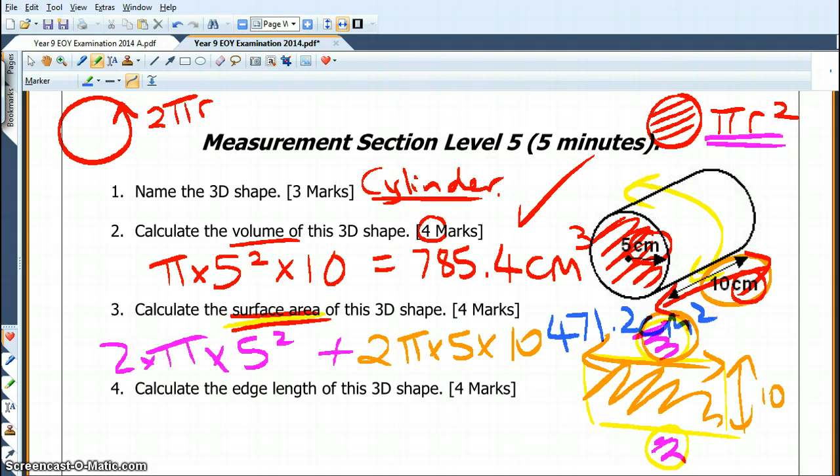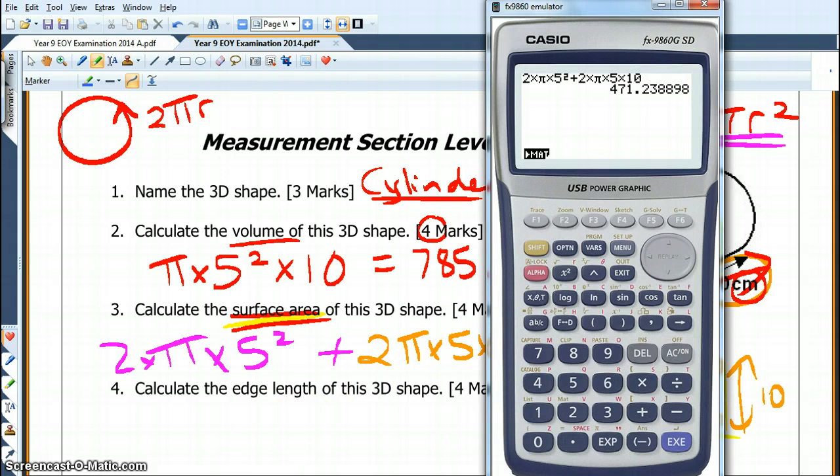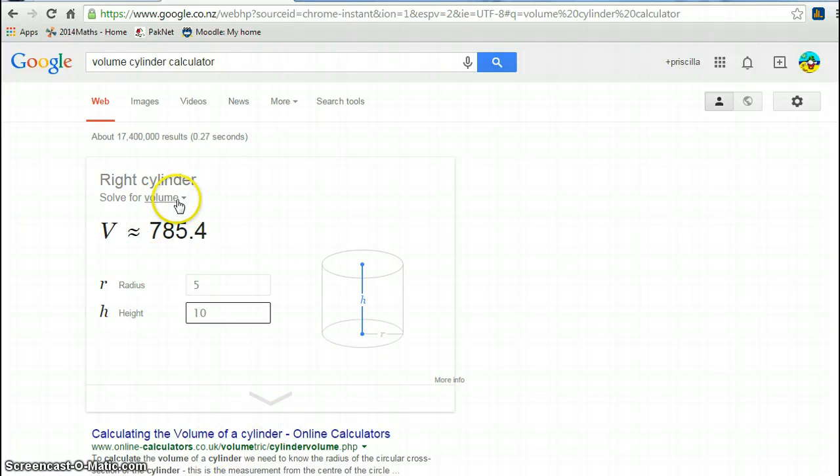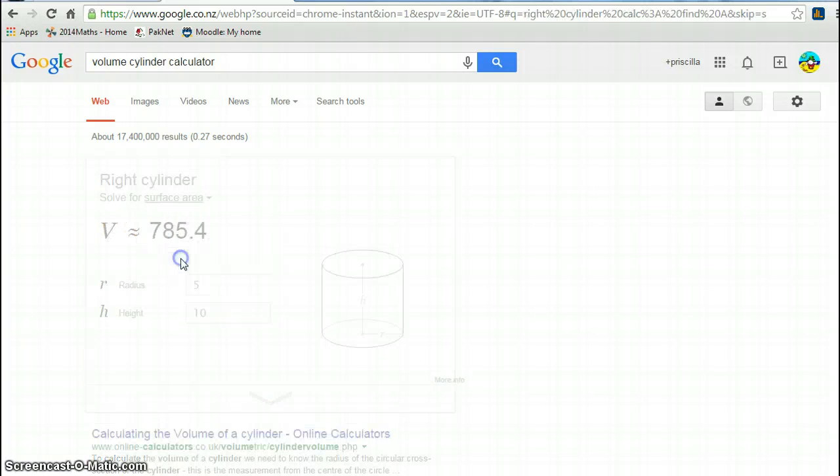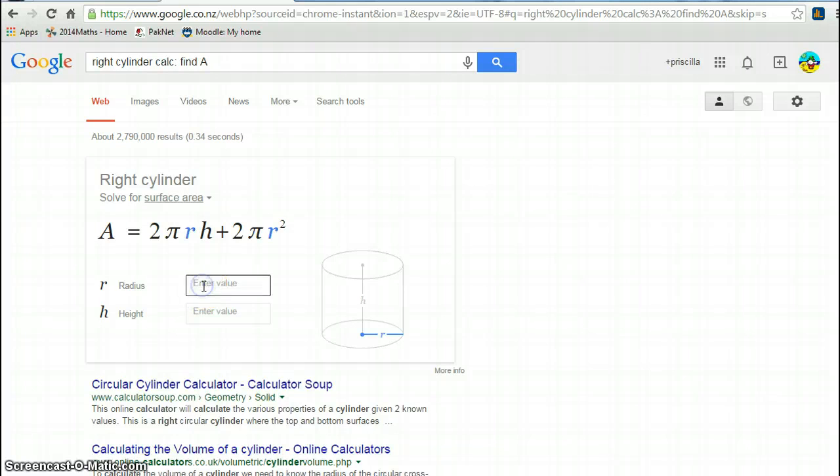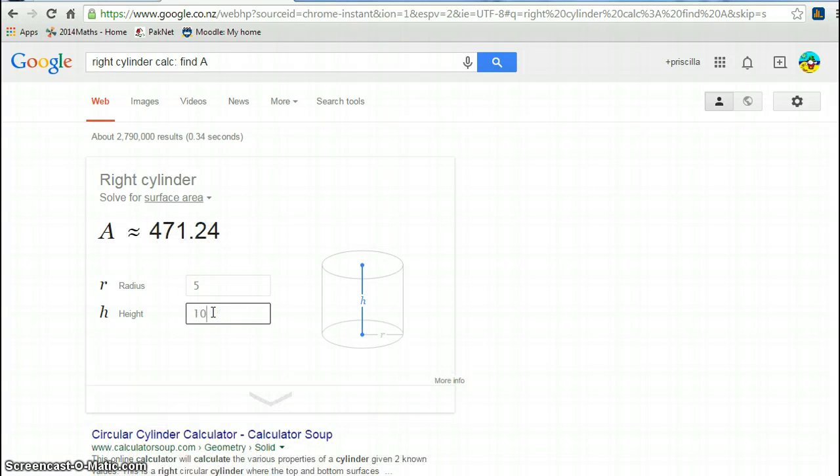How do I check it? I go back to Google, I change it to surface area, I have my radius of 5, I have my height of 10, 471.2. Sweet.